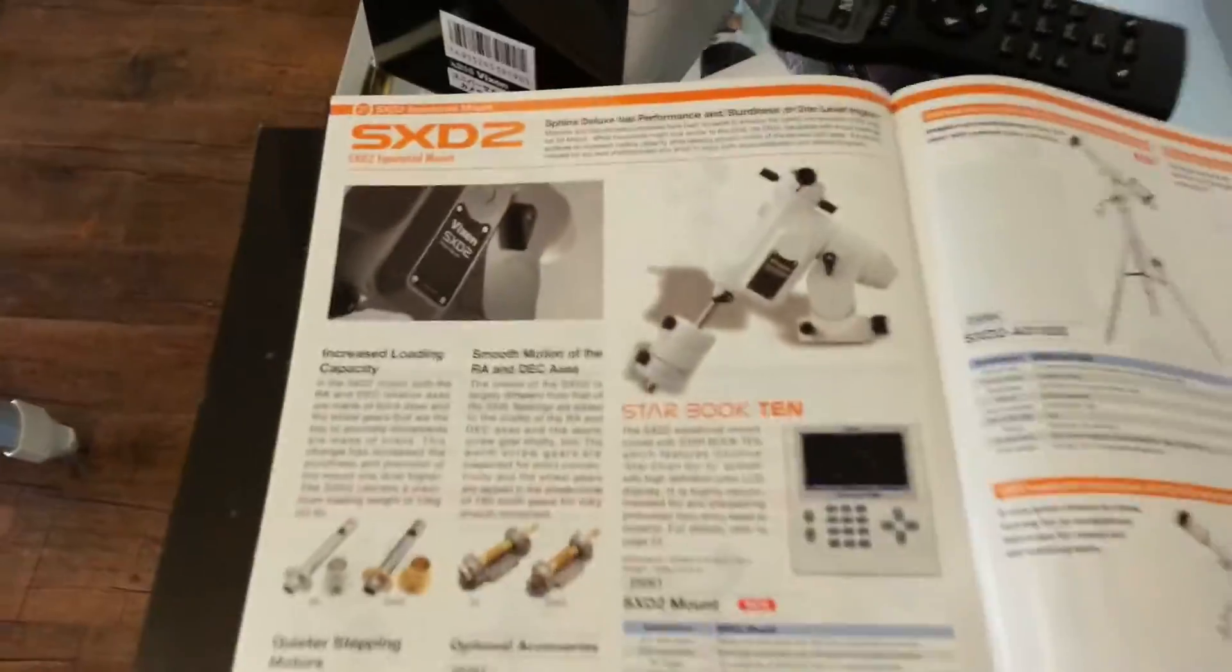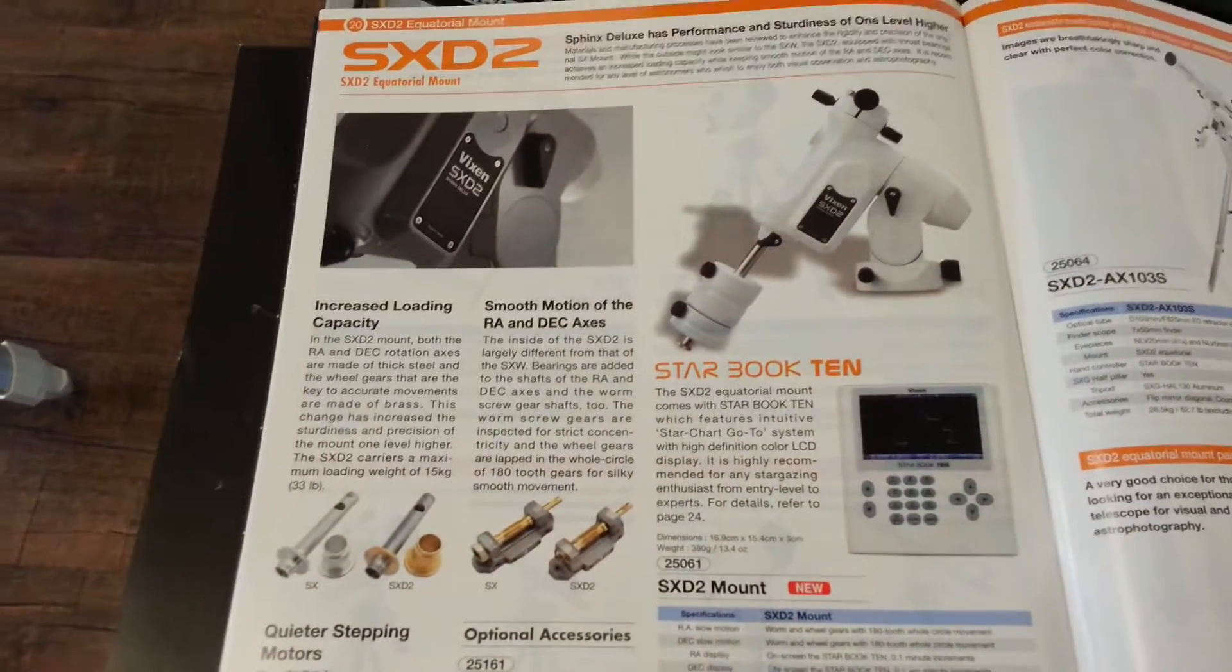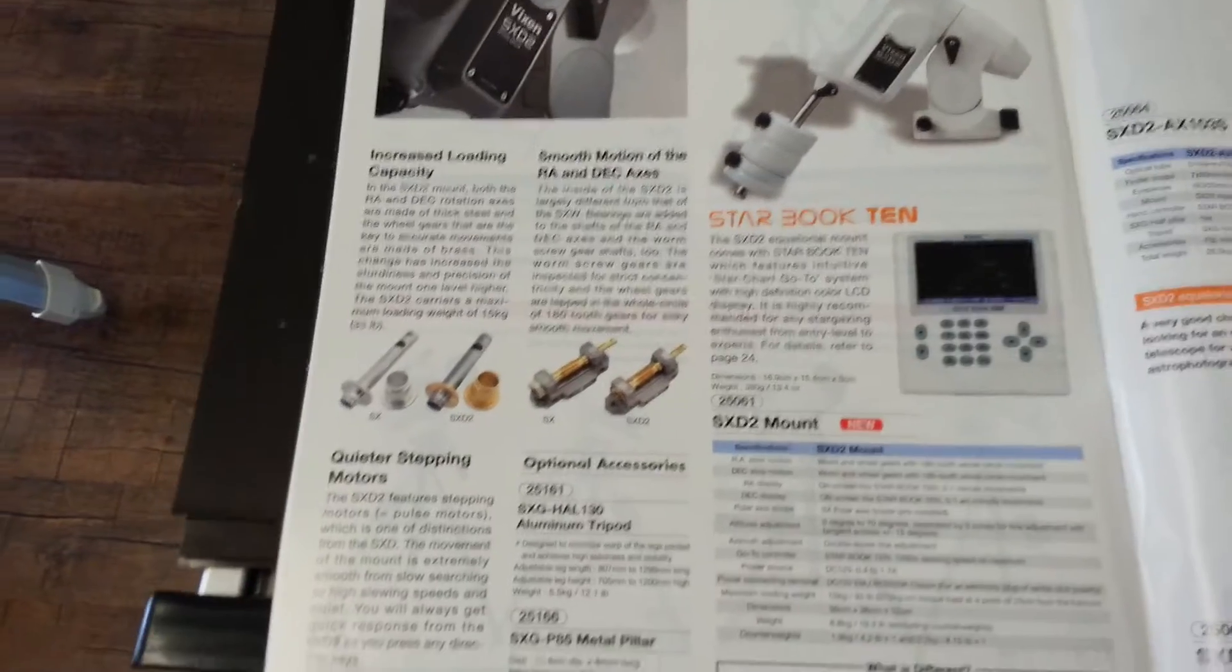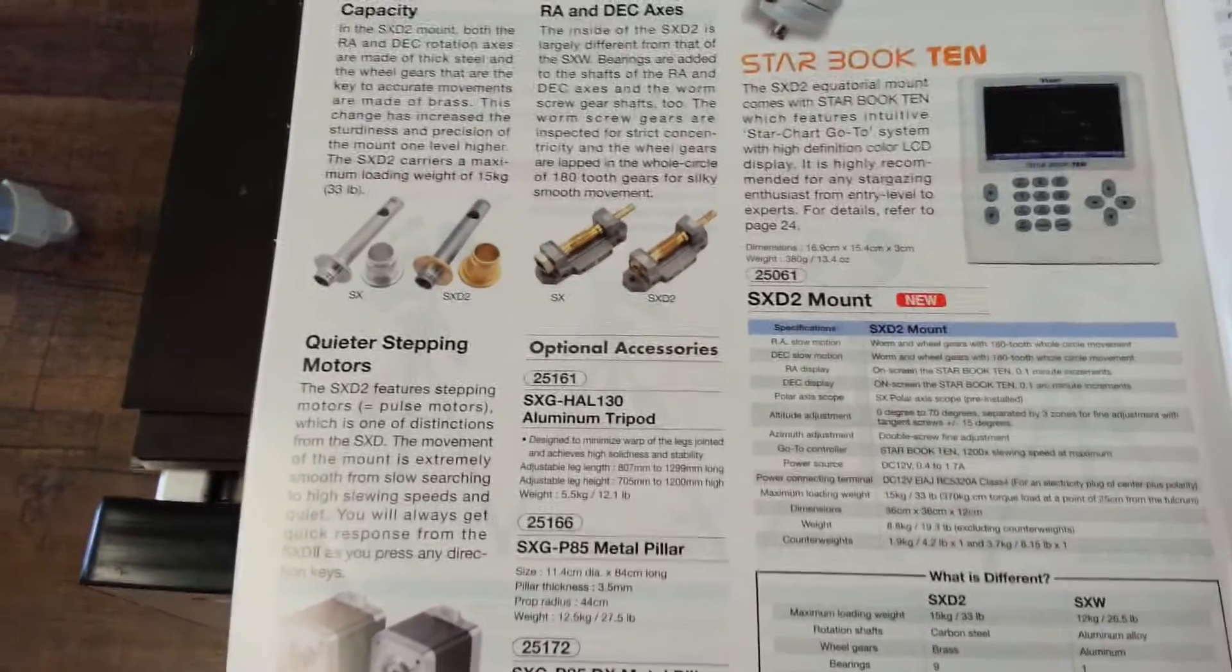Today we're with Brian Deese and the new SX-D2 mount. We're looking at an amazing mount here with 33 pounds astrophotographic load capacity with the new stepper motors with the Starbook 10. It is just amazing.